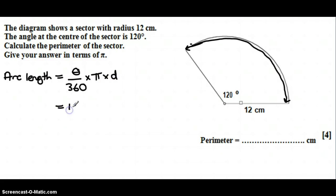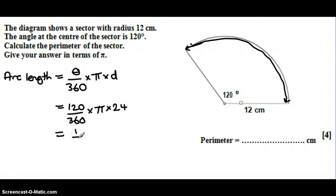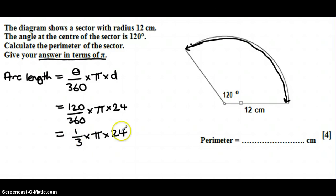Putting the numbers in, we've got an angle of 120 out of 360 degrees, times pi, and the diameter of the entire circle would be 24 centimeters. 120 over 360 simplifies to a third. The question asks for the answer in terms of pi, so a third times pi times 24 — since I'm multiplying three things I can multiply in any order — a third times 24 gives 8, so the arc length is 8π.